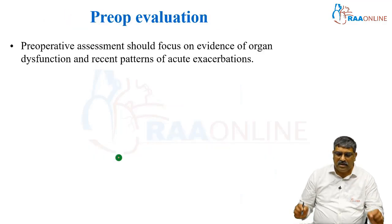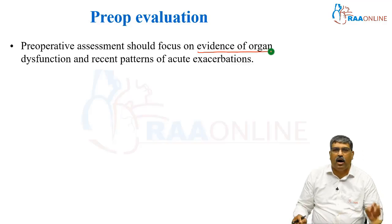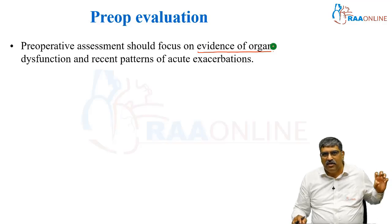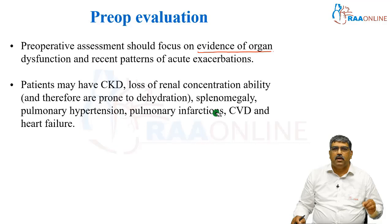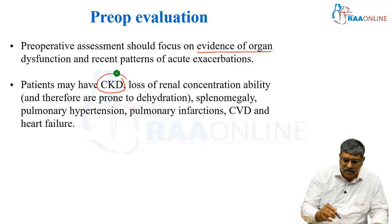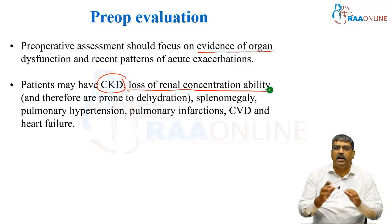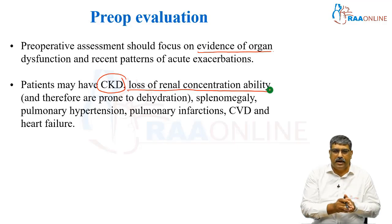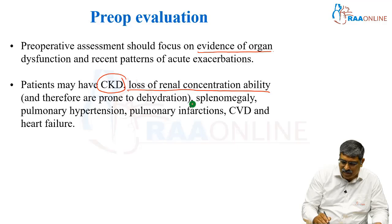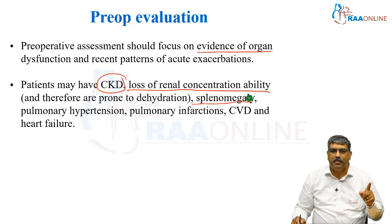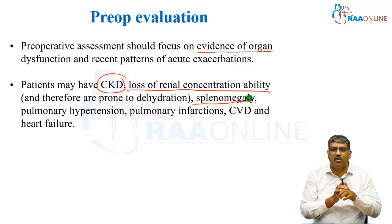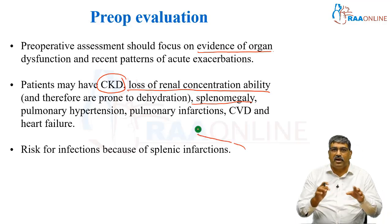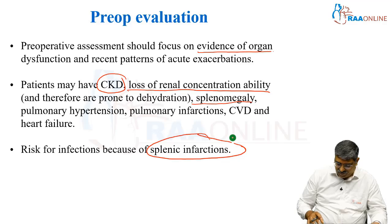Your preoperative assessment in sickle cell disease should focus on organ dysfunction and recent pattern of any acute exacerbation, whether any vaso-occlusive crisis happened. The patient may have chronic kidney disease with loss of renal concentration ability, so a lot of urine comes out and the patient may be prone to dehydration. Apart from that, the patient may have splenomegaly, pulmonary hypertension, pulmonary infarction due to vaso-occlusion, cardiovascular disease, and heart failure. Patients are also prone to infection due to splenic infarction.